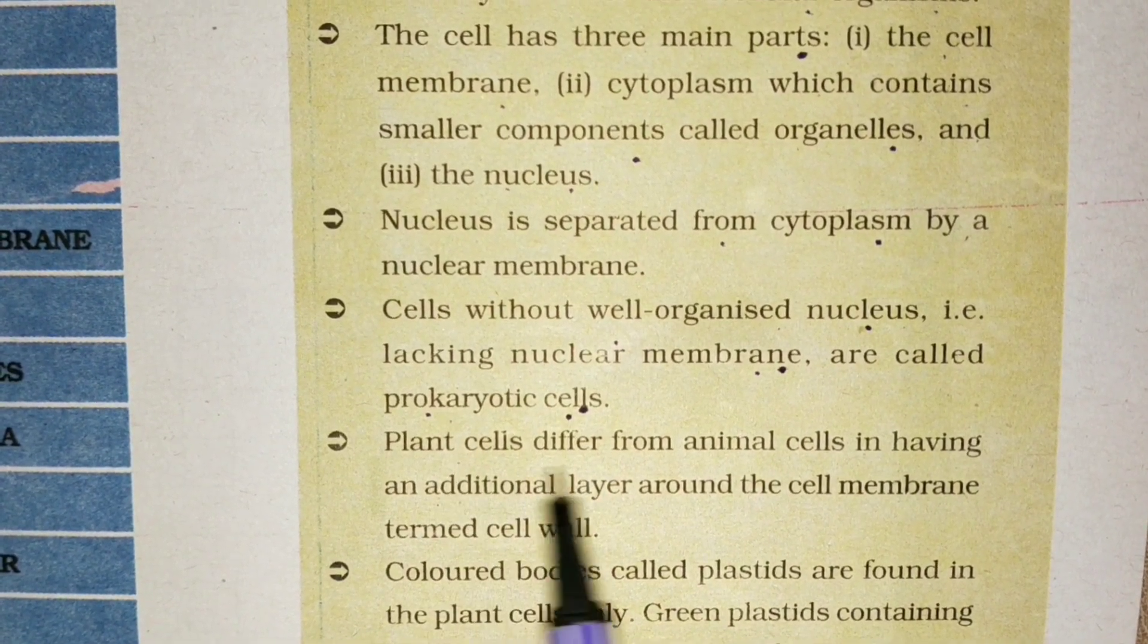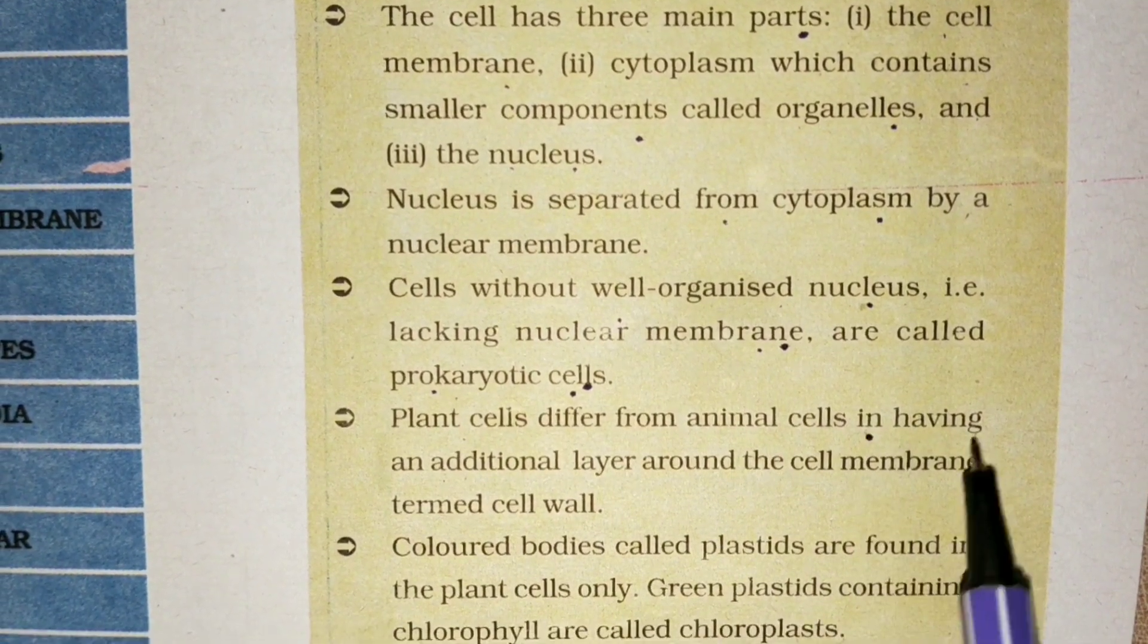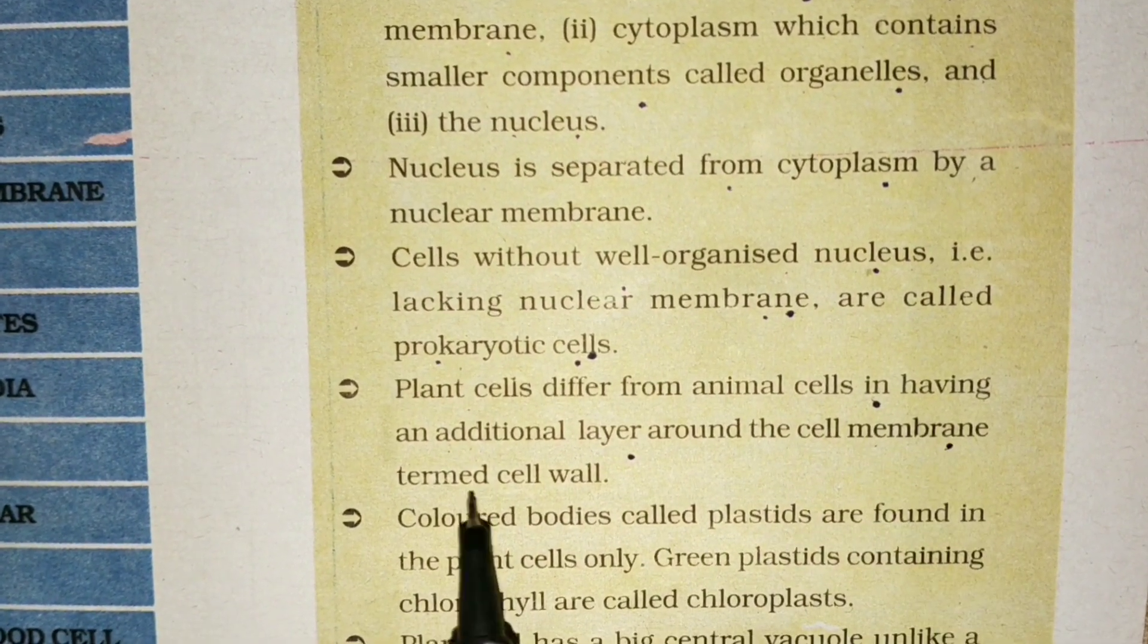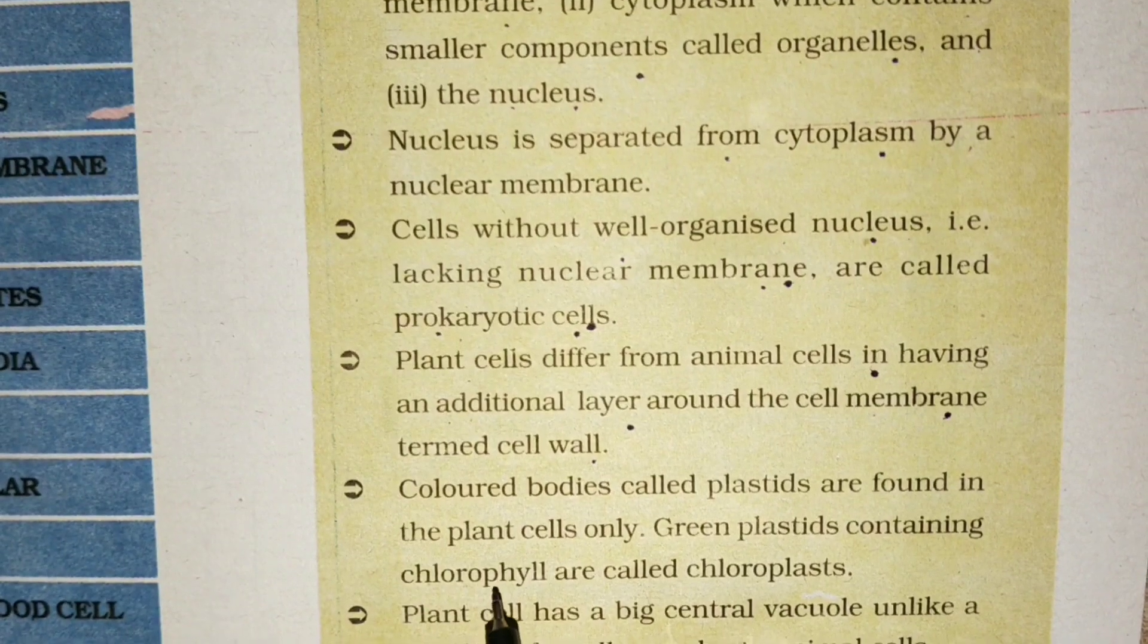Plant cells differ from animal cells in having an additional layer around the cell membrane termed as cell wall. Colored